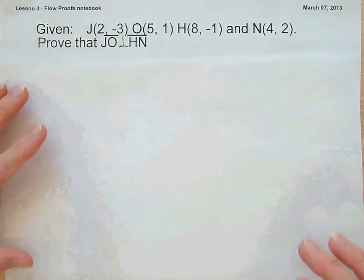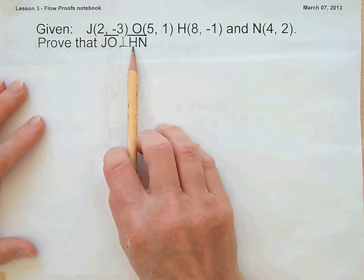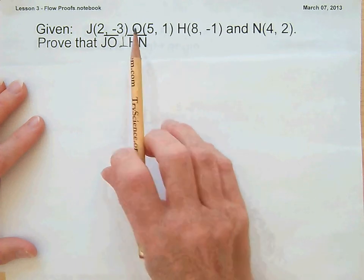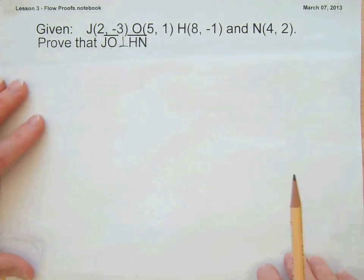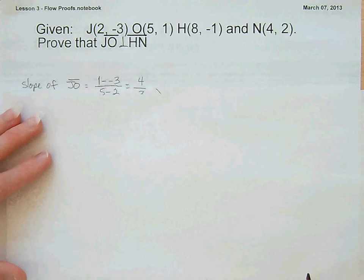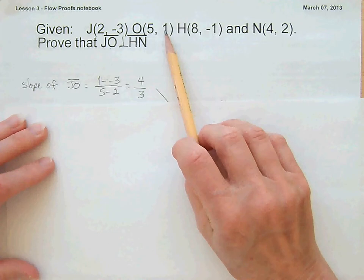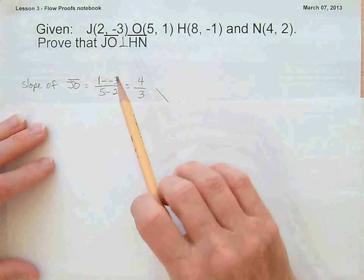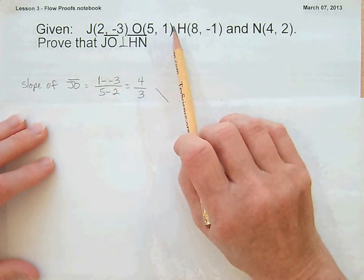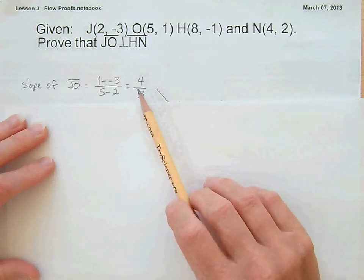So let's find the slope of segment JO and the slope of segment HN and see if they are perpendicular. The slope of JO: take the difference in the y's, 1 minus negative 3, that's 1 plus 3, which is 4, and 5 minus 2 is 3. So the slope of JO is 4 thirds.